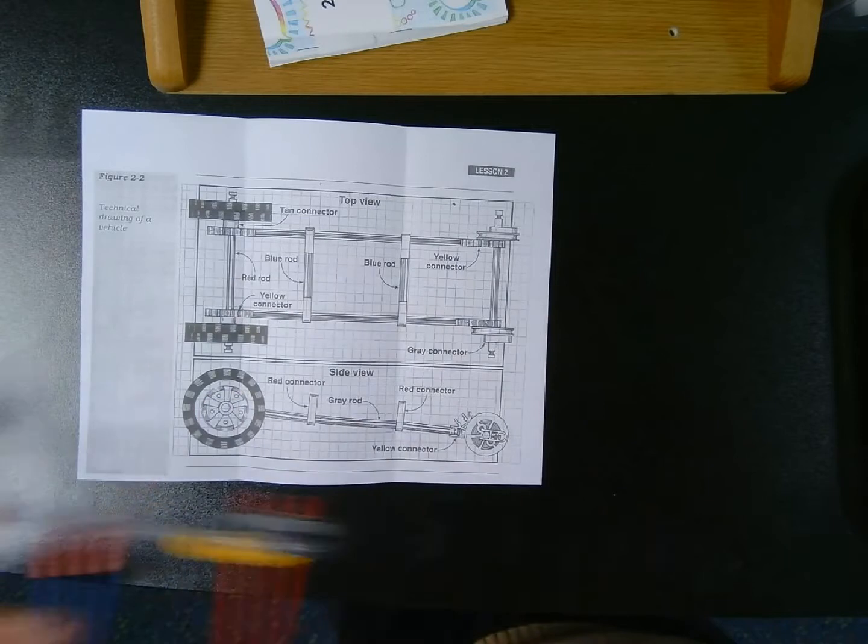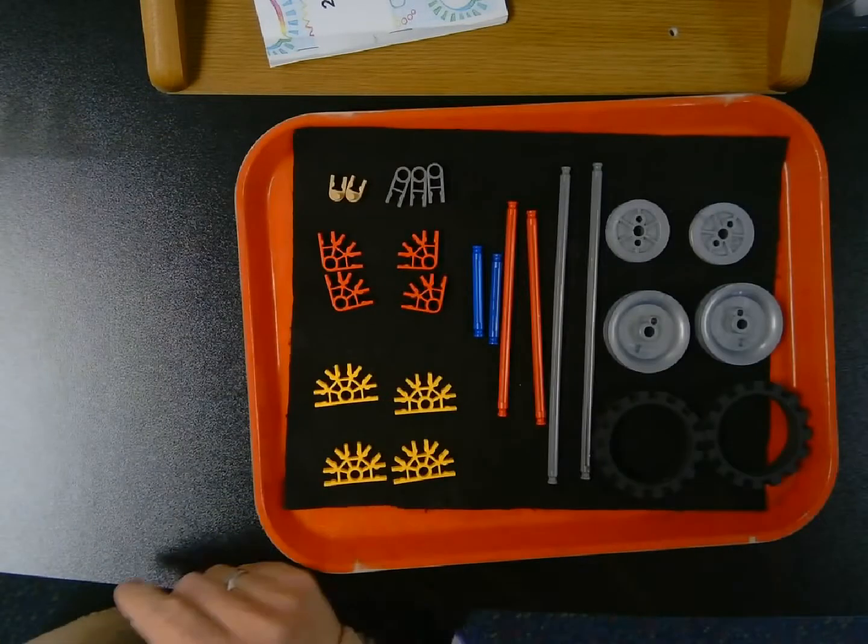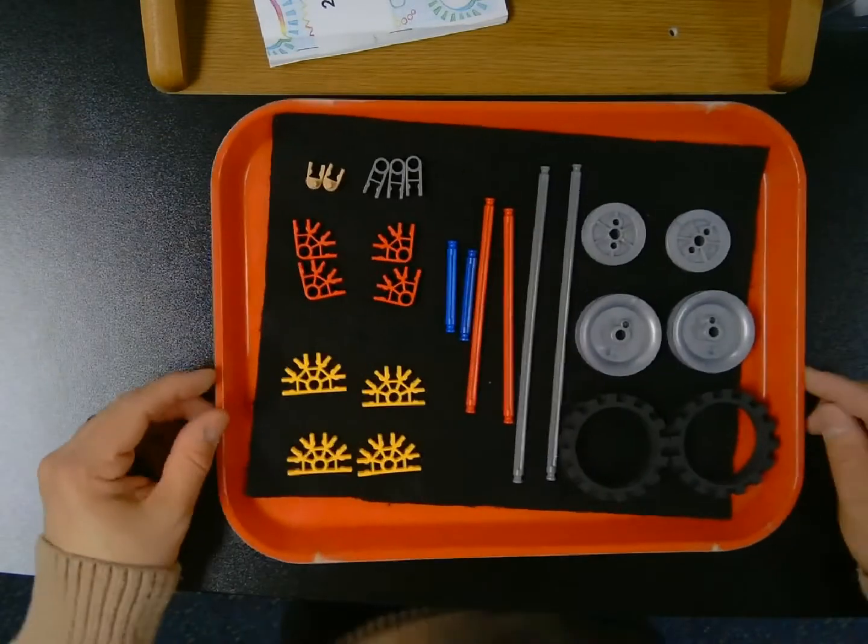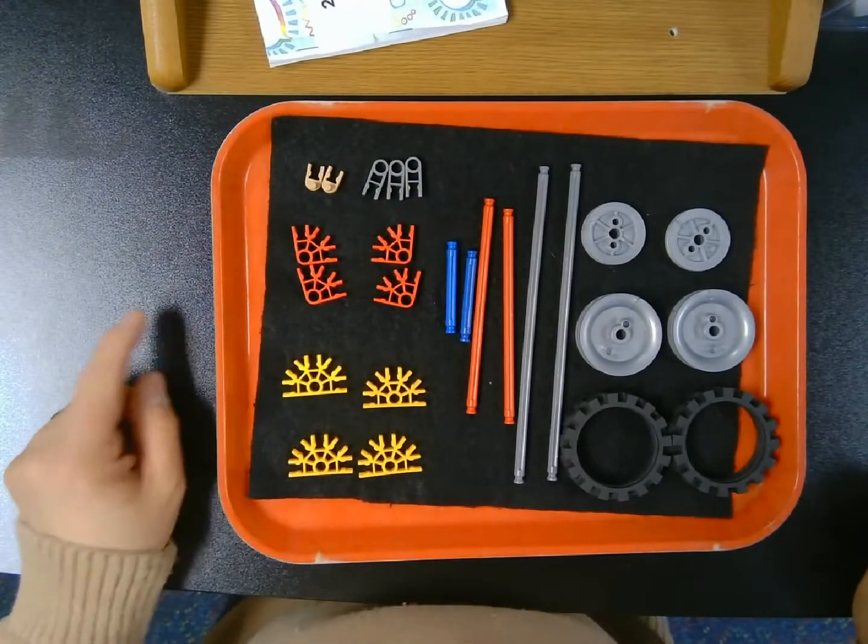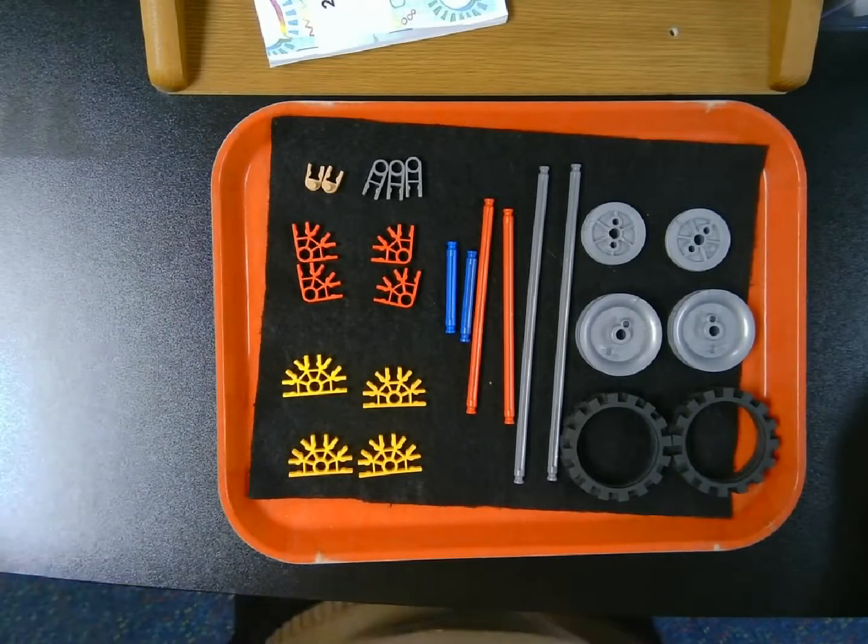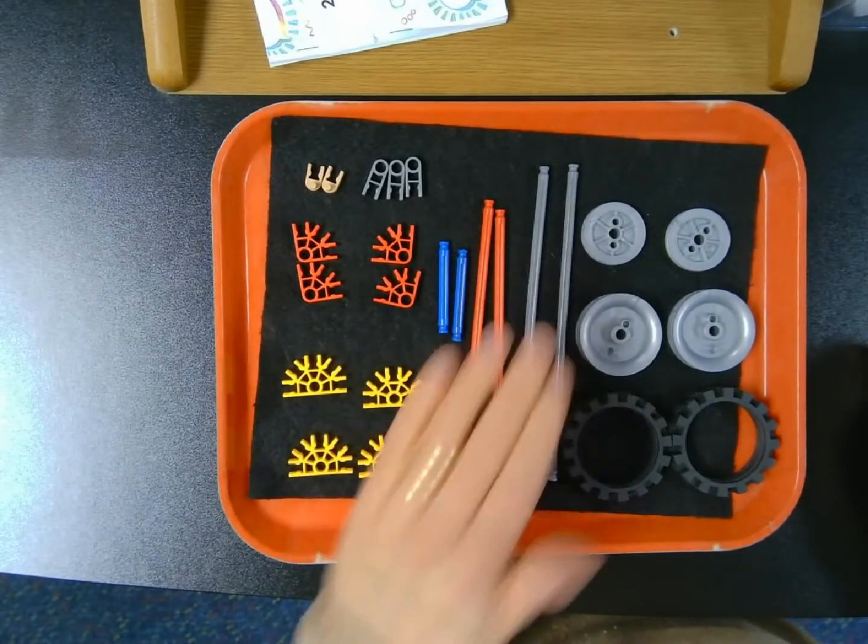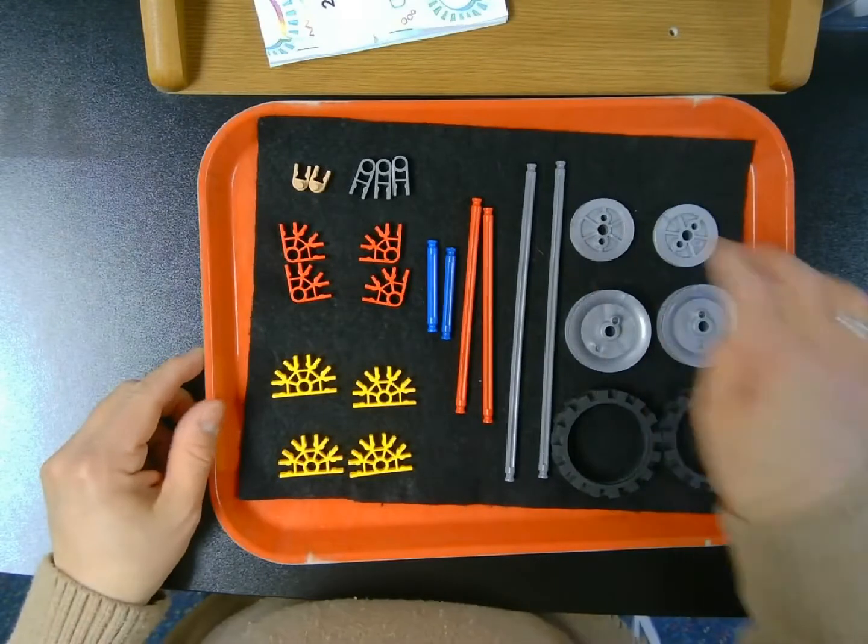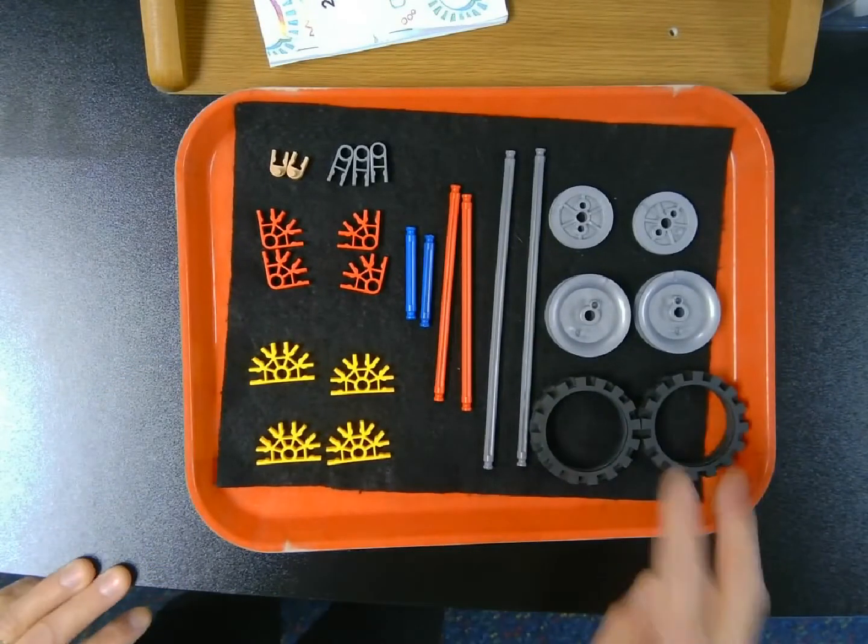Now I'm going to walk you through how to build that standardized vehicle from the ground up. These are the pieces you're going to need: two tan connectors, three gray connectors, four red connectors, four yellow connectors, two blue rods, two red rods, two gray rods, two smaller wheels, two larger wheels, and two larger tires.